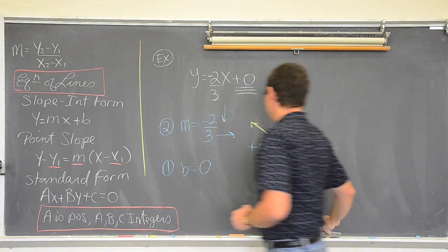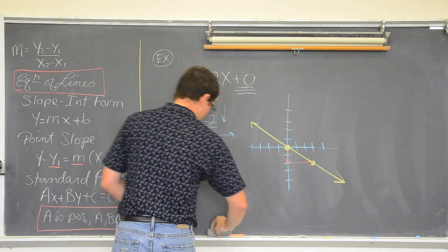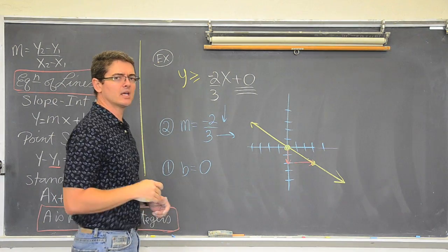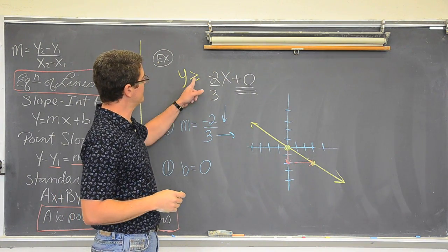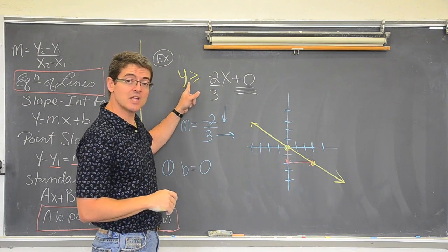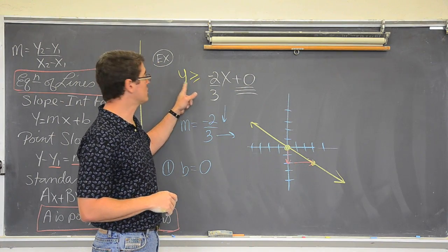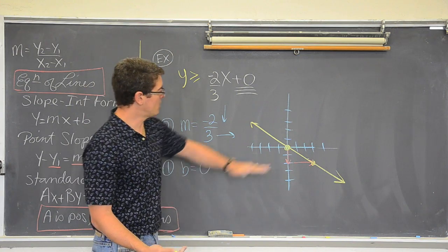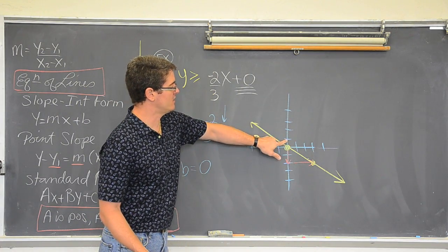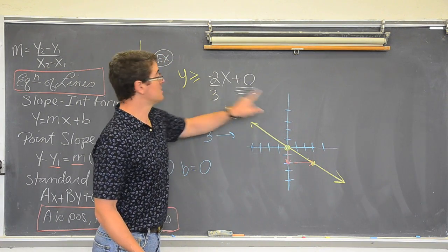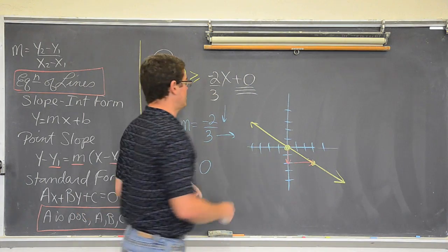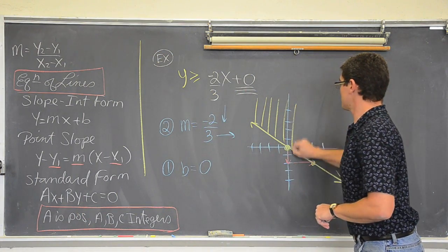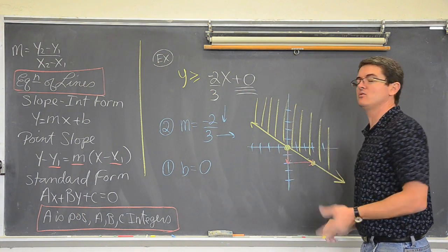Let's say for a second that this were y is greater than or equal to negative three. Now I have an inequality — that means shading. Where do my y's get bigger? Y's get bigger as you go up, not down. So that inequality, when you get to that in your algebra or algebra two book or geometry, will indicate that you shade up.